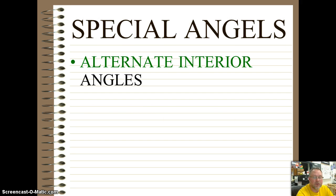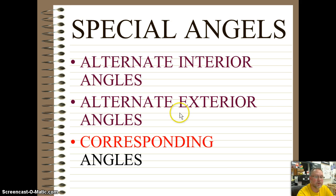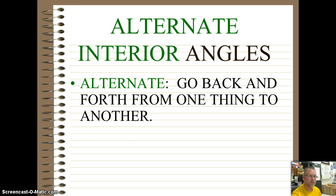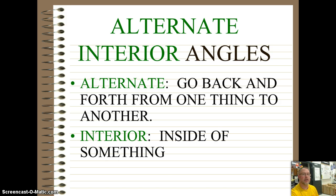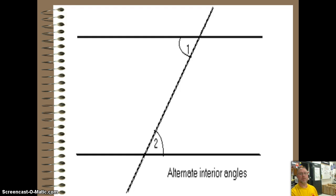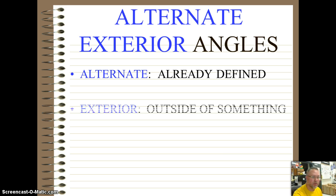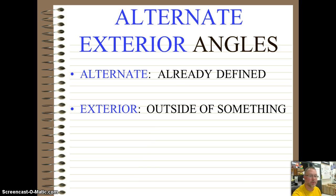Special angles here include alternate interiors, alternate exteriors, and corresponding — and corresponding are usually the tougher ones to deal with. Alternate means going back and forth from one thing to another. Interior is the inside of something, so we're looking at the inside of the parallel lines — here's an example of alternate interiors. Alternate exterior: exterior is the outside, so now we're dealing with the outside of the parallel lines — here's an example of alternate exteriors.